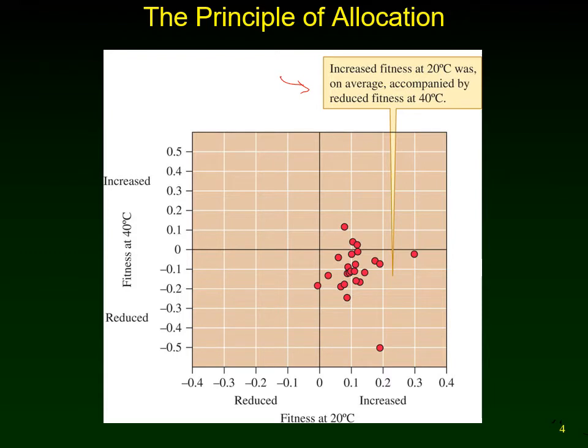Bennett and Lenski's experiment looked at 24 lineages of E. coli, which normally lives at 37 degrees Celsius in the human body. They grew these 24 lineages at 37 degrees for 2000 generations. The generation time for E. coli at 40 degrees is approximately 20 minutes — they reproduce every 20 minutes — so you can do great evolutionary research with microbial populations.